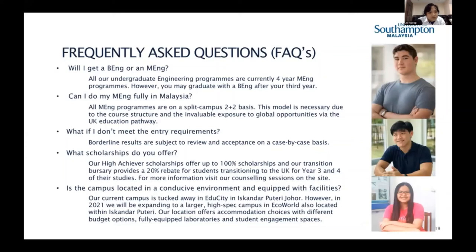FAQ: Will I get a Bachelor of Engineering or a Master of Engineering? At our campus, all undergraduate engineering programs are nominally four years and are Master of Engineering-based. However, if you meet the requirements, you can graduate after three years with a Bachelor of Engineering. You'll always be registered under MEng first, which gives you a lot of options.